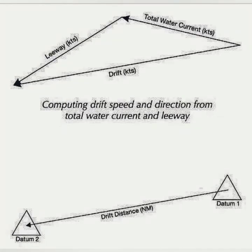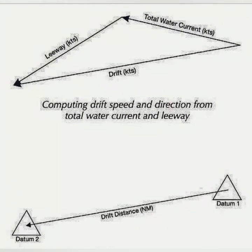In the diagram, datum 1 is the position from where the distress was given. By the time the search party has reached on scene, some time has elapsed, so that gives us the drift distance and we get the final datum — datum 2. There are two forces at sea causing drift: first is leeway because of wind, and then the total water current. We write a vector for both leeway and total water current to get the final drift distance.